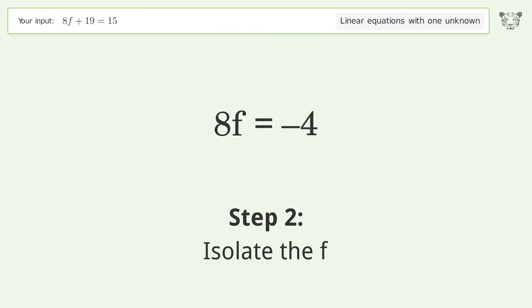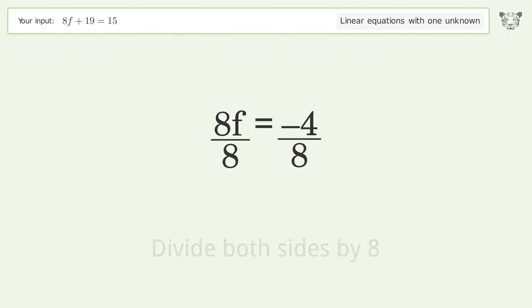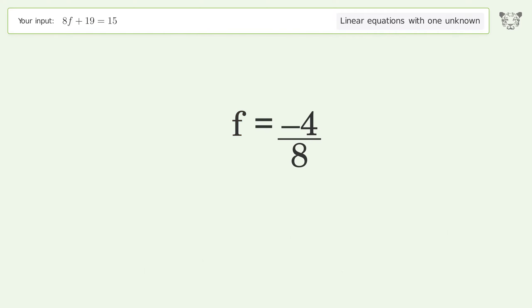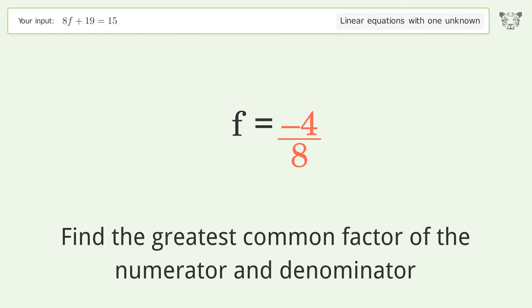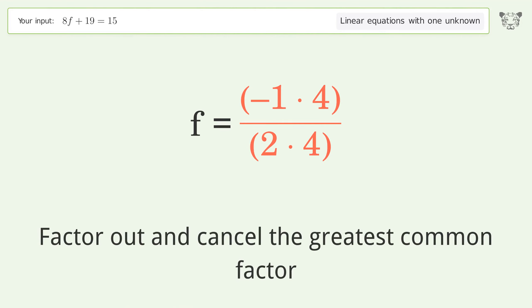Isolate f by dividing both sides by eight, then simplify the fraction. Find the greatest common factor of the numerator and denominator, then factor out and cancel the greatest common factor.